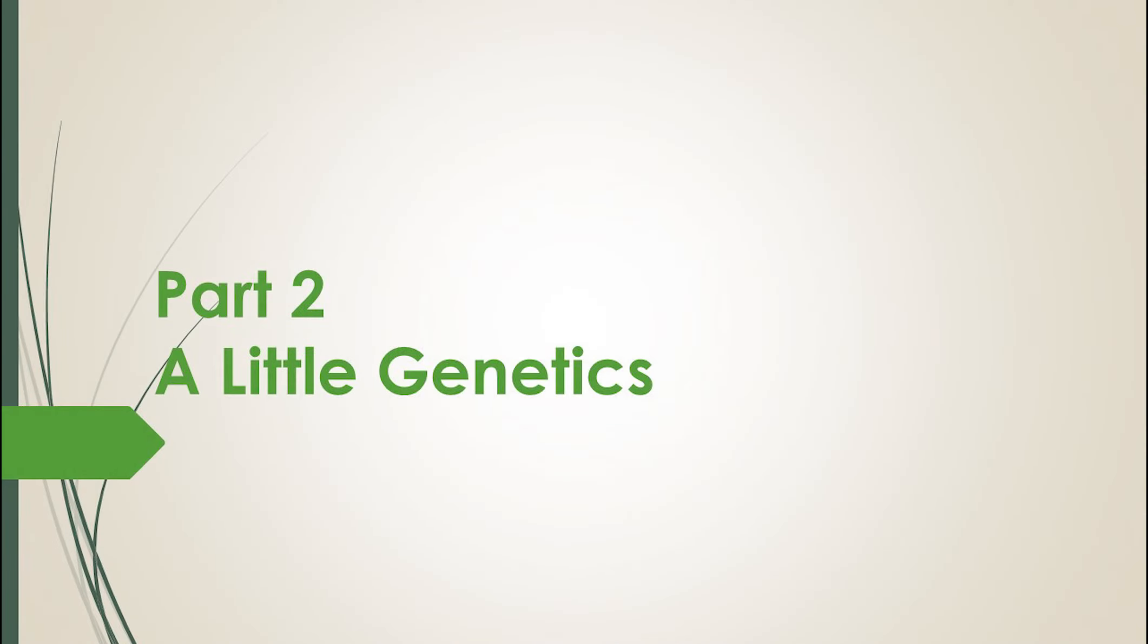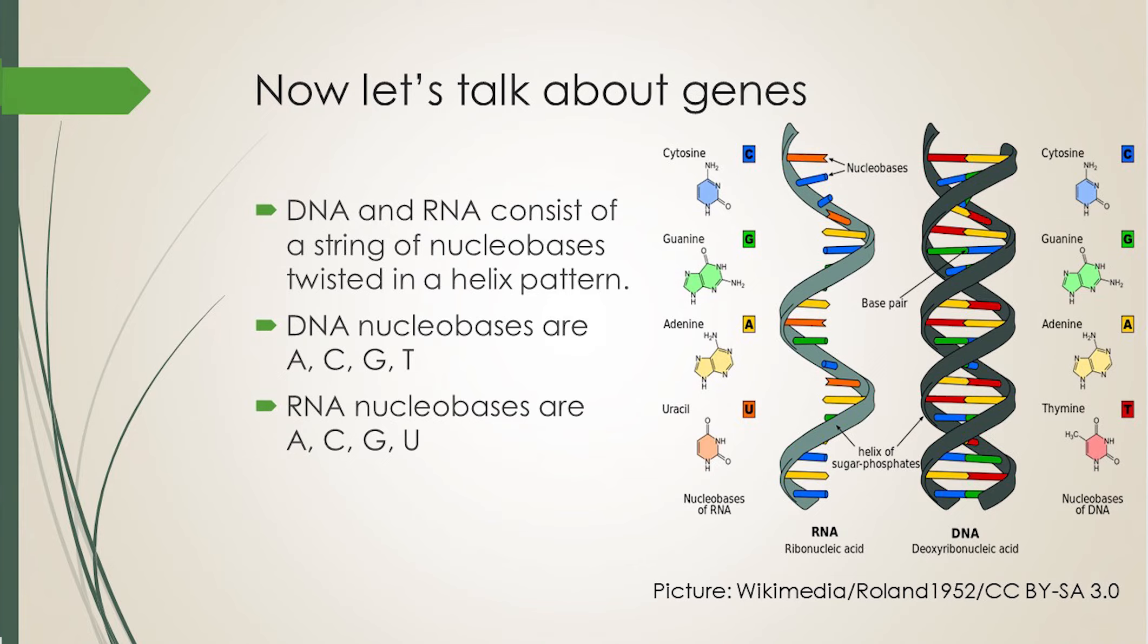Now let's switch gears and talk about genes. I'm no biologist, so what I say may be too simplistic or naive or even incorrect. But I'm hoping that even if I say something that's wrong biologically, it doesn't affect the math part. Please do leave a comment though if you find some mistake. Our genetic materials are DNA and RNA, and they consist of a string of nucleobases twisted in a helix pattern. The nucleobases for DNA are abbreviated A, C, G, T, and for RNA are A, C, G, U.